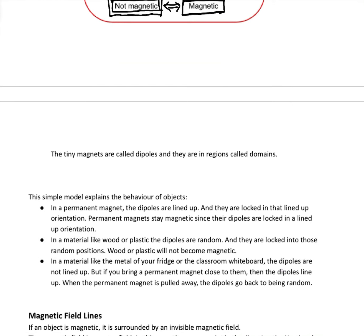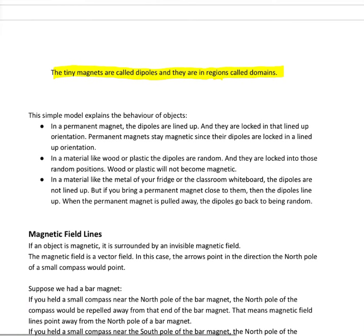So a simple model, but it works nicely. The tiny magnets are called dipoles. And those regions that were drawn in there, they are sometimes called domains. In a permanent magnet, they're lined up and they're kind of locked in their lined up orientation. In something like wood or plastic, they're random and locked into random. In a material like your fridge or the whiteboard, they're not lined up, but they're allowed to switch and become lined up and switch and go back to being random.